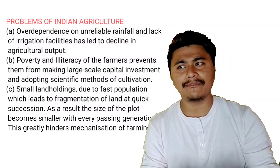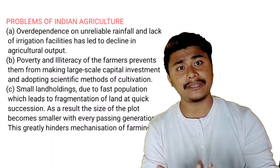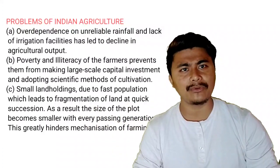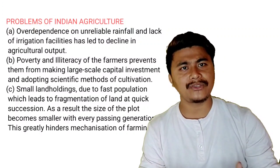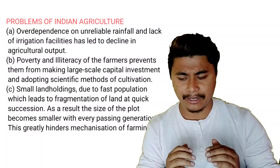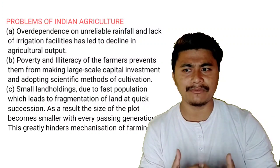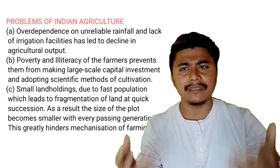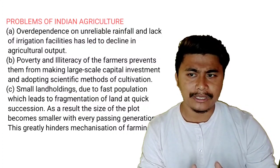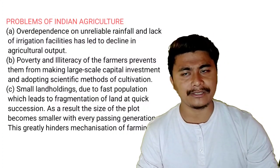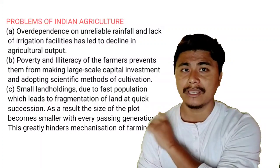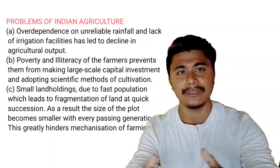Rainfall in India is seasonal — only four months of the year receive rainfall, and it is unevenly distributed: some parts receive very little while others receive very heavy amounts. The lack of water resources and irrigation facilities is a major problem. Another setback is the poverty and illiteracy of farmers, which makes them afraid to make larger investments in their farmland, take loans, or apply scientific methods and techniques of cultivation.